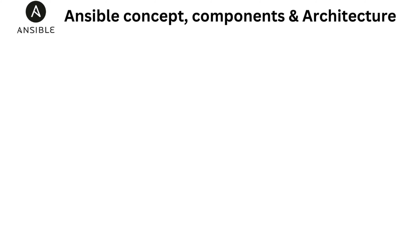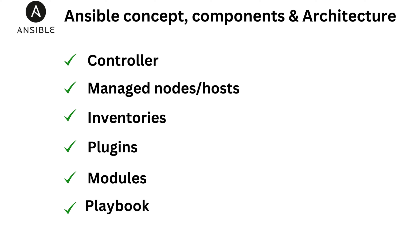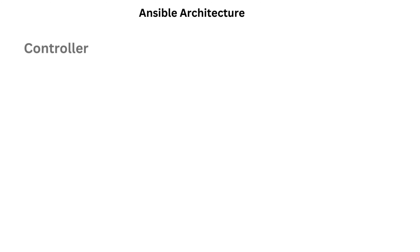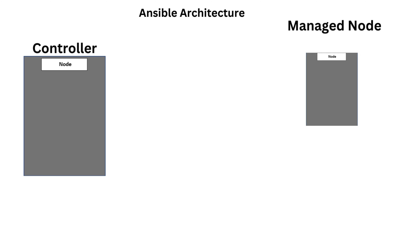Let's look at the Ansible concepts, components, and architecture. In this section we will talk about components such as the controller, managed nodes, inventories, plugins, modules, playbooks, and ad hoc. The Ansible architecture is similar to a server-client based system. To use Ansible there must be two types of machines: one machine is the Ansible control node, also known as the controller, while the other is the managed node.